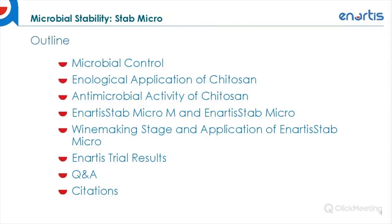Today we're going to be going over microbial control, the various enological applications of Ketozan, and its antimicrobial activity. We'll then talk about Anardis's range of Ketozan — Anardis Stab Micro M and Anardis Stab Micro — the winemaking stage and application of Anardis Stab Micro. We'll share some trial results and have a Q&A. I highly recommend everyone look at the citations in this presentation if they want to dive deeper into the subject of Ketozan in enology.